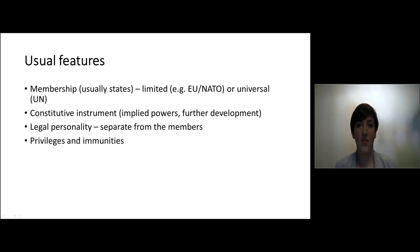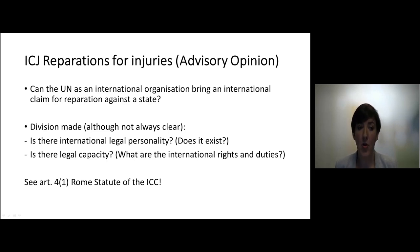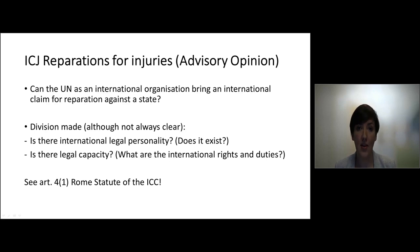The international organization also enjoys certain privileges and immunities. In one of the cases prescribed for this week — the advisory opinion by the ICJ on Reparations for Injuries — the question was asked whether the UN, an international organization, could bring an international claim for reparation against a state. And why was that question so important? Well, as mentioned in the first clip, for a long time states were the only subjects of international law. So asking whether an international organization could act as a subject of international law was, for that time, quite unusual and very important.